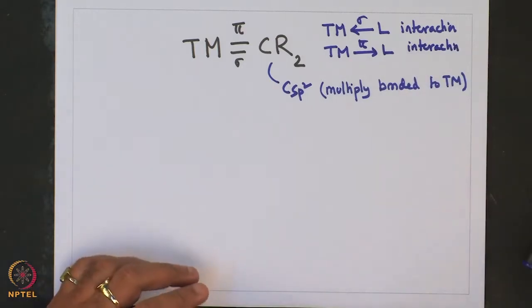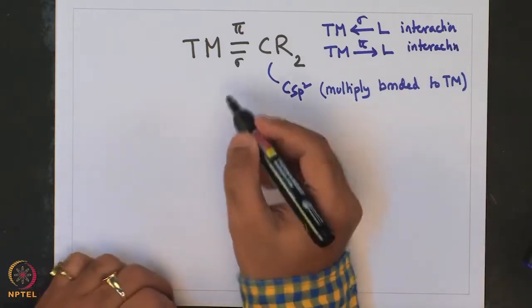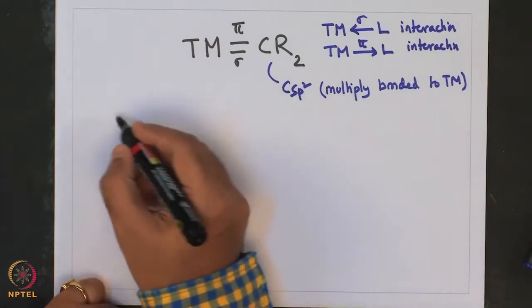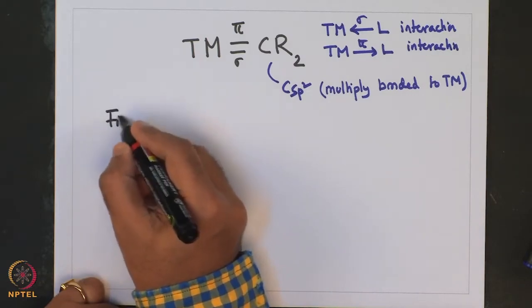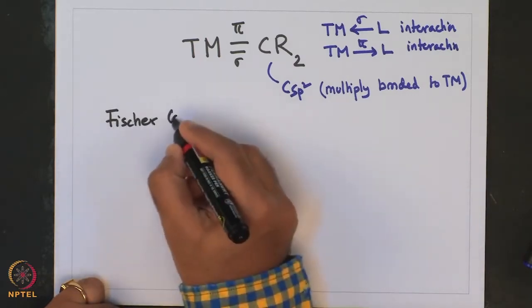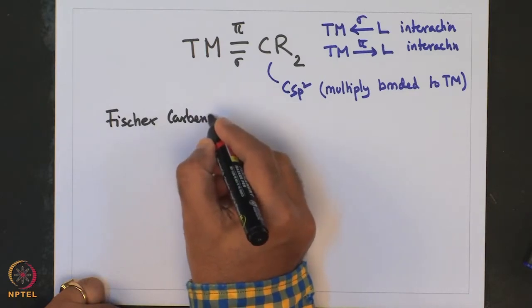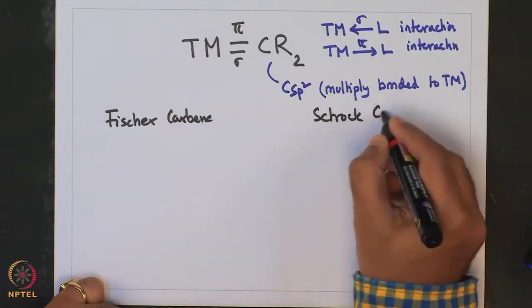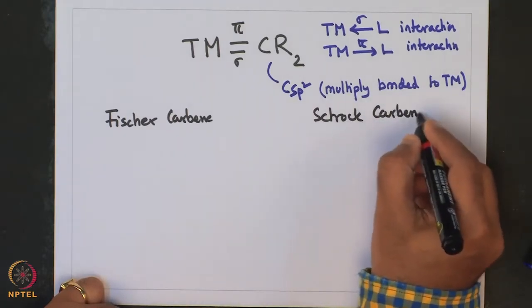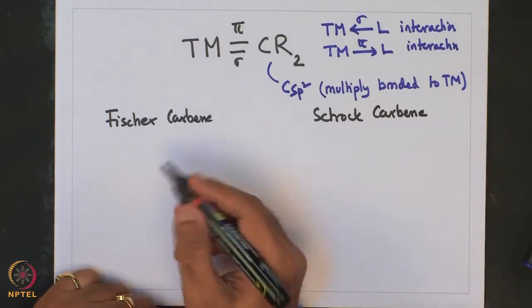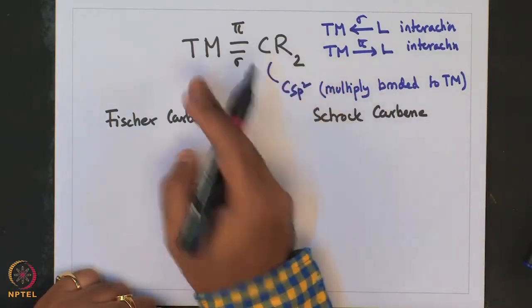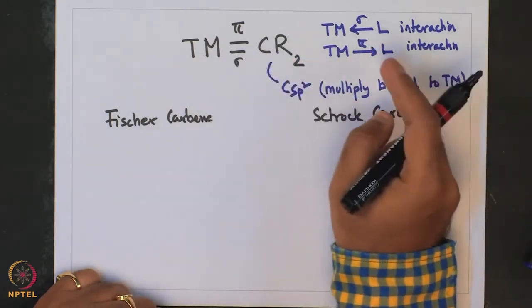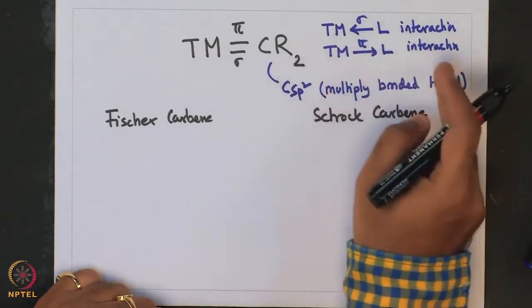In our last class, we saw that Transition Metal Carbene Complexes can be classified into two types: Fischer Carbene and Schrock Carbene. Each of these carbenes has a CR2 moiety bound to the transition metal, and each shows two types of interactions: one is ligand-to-metal and the other is metal-to-ligand.